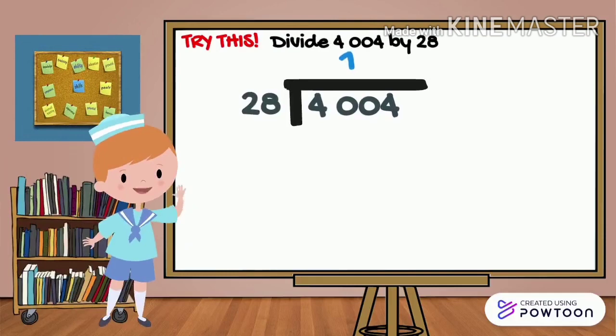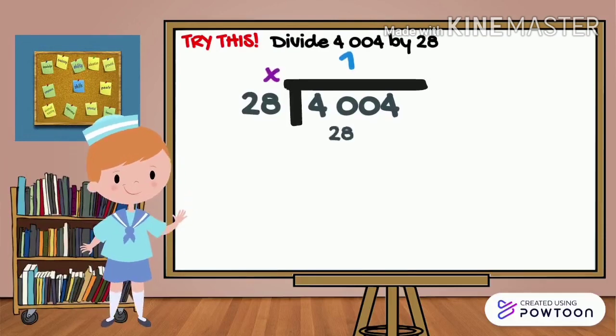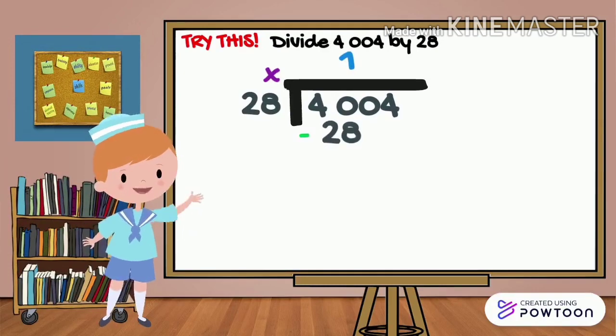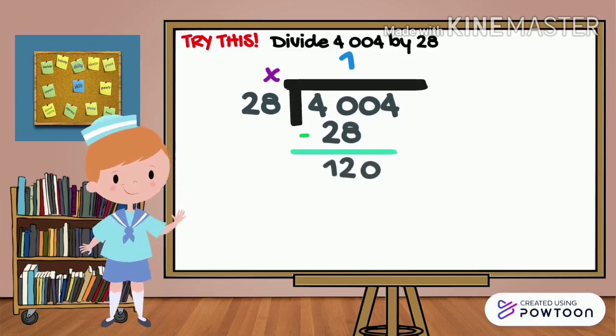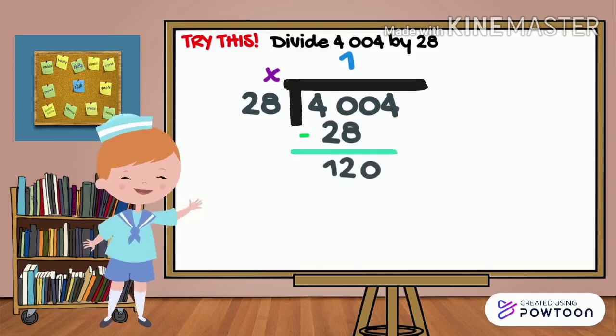Try this! Divide 4,004 by 28. 40 divided by 28 is 1, and 1 times 28 is 28. Then, subtract: 40 minus 28 is equal to 12. 12 divided by 28 is 0, so take the next digit. 120 divided by 28.